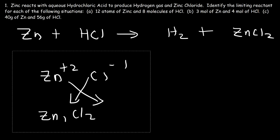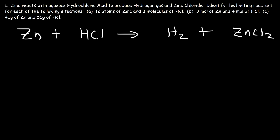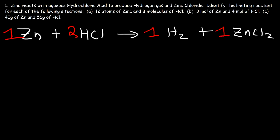Now we need to balance this chemical reaction. All we need to do is put a 2 in front of HCl, because we have 2 chlorines on the right side. After that, everything else is balanced. We have 1 zinc atom on both sides, and 2 hydrogen atoms on both sides of the equation.